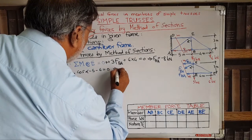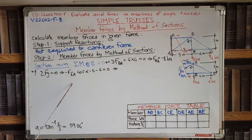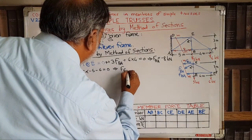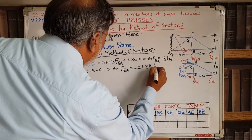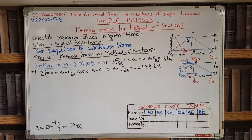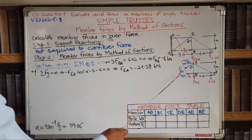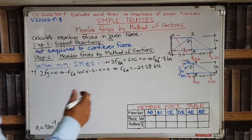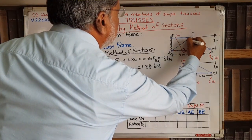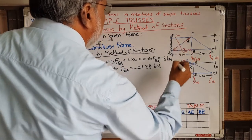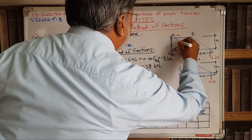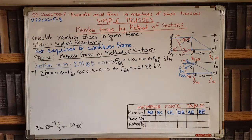Solving sigma Fy = 0, with F_EA as the only unknown, gives F_EA = −21.38 kN. The negative sign means the assumed direction away from joint E is incorrect; the force should act towards joint E. We reverse the arrow direction on the diagram, and the magnitude is 21.38 kN.